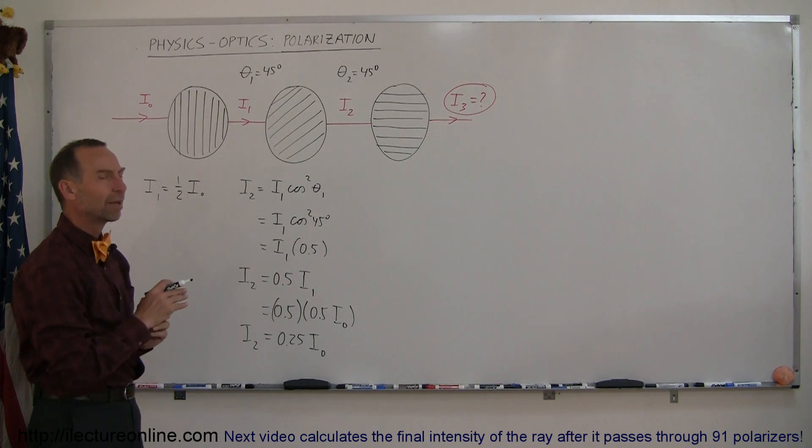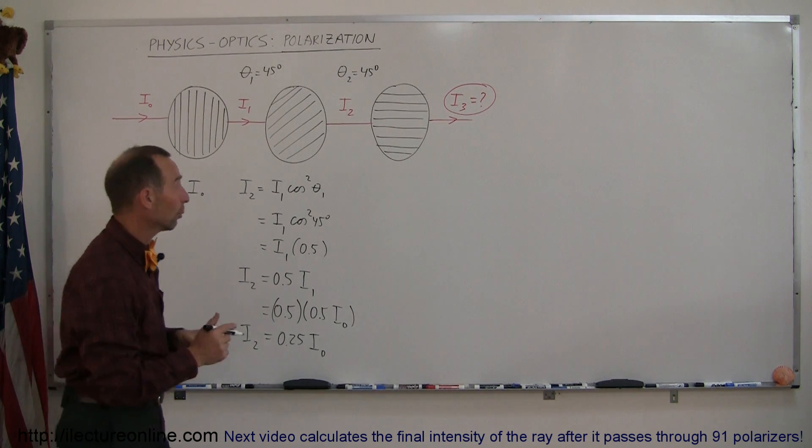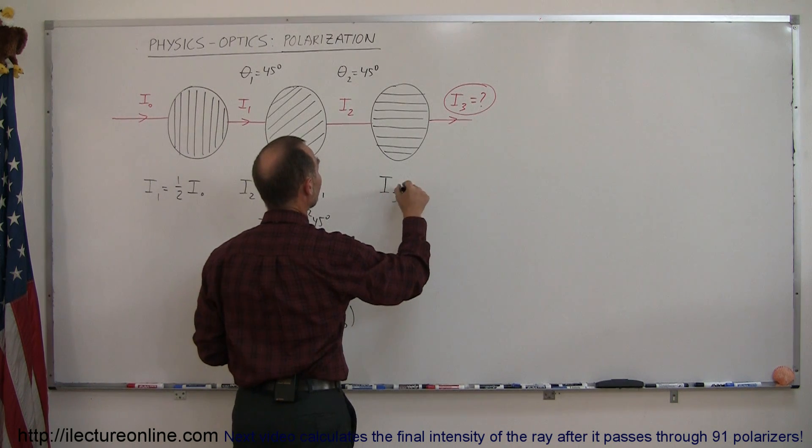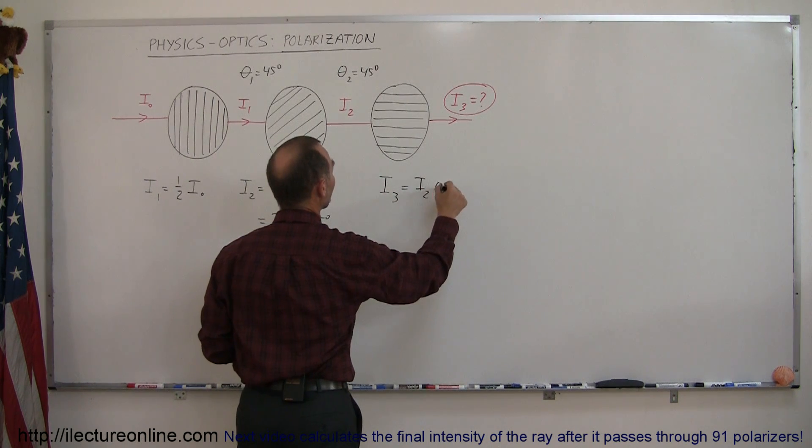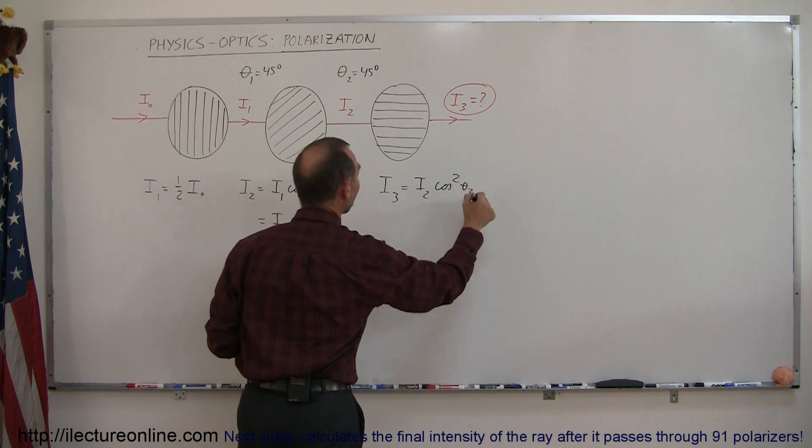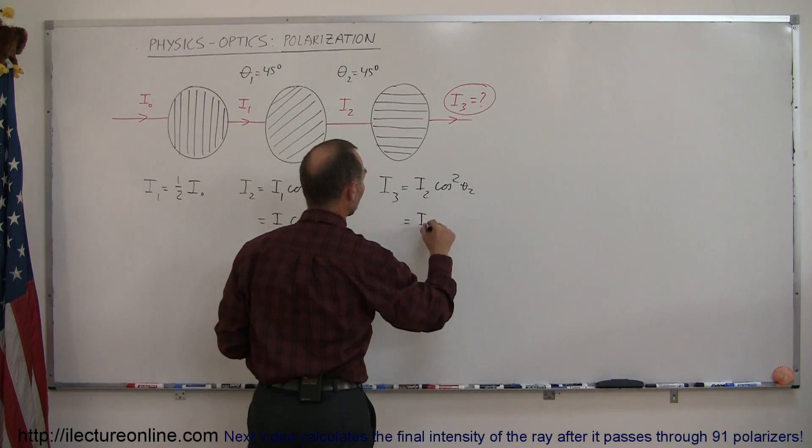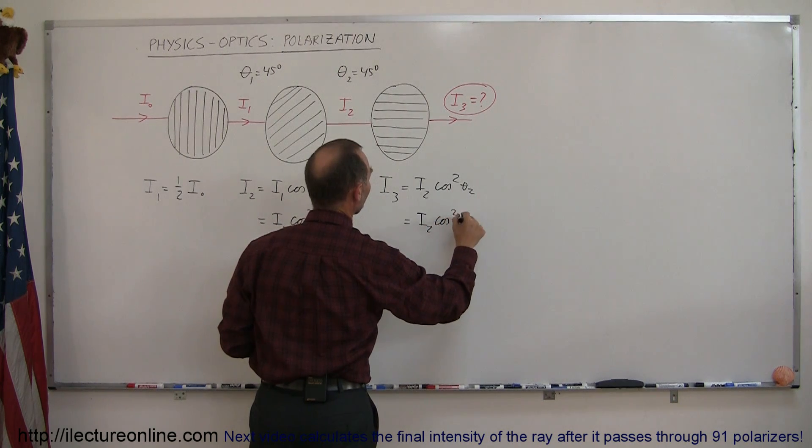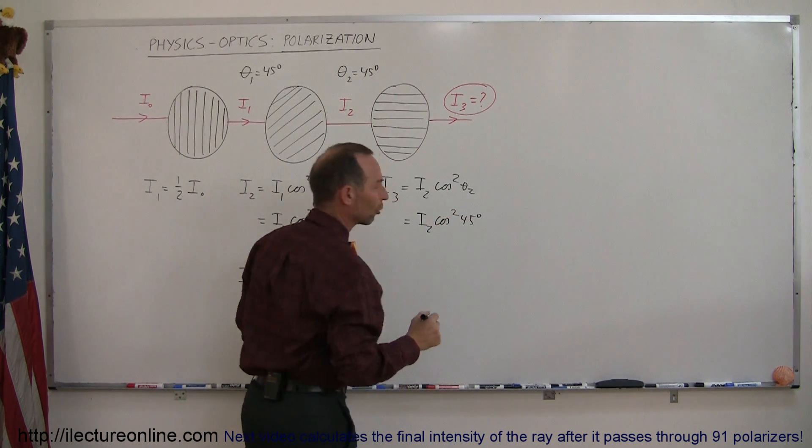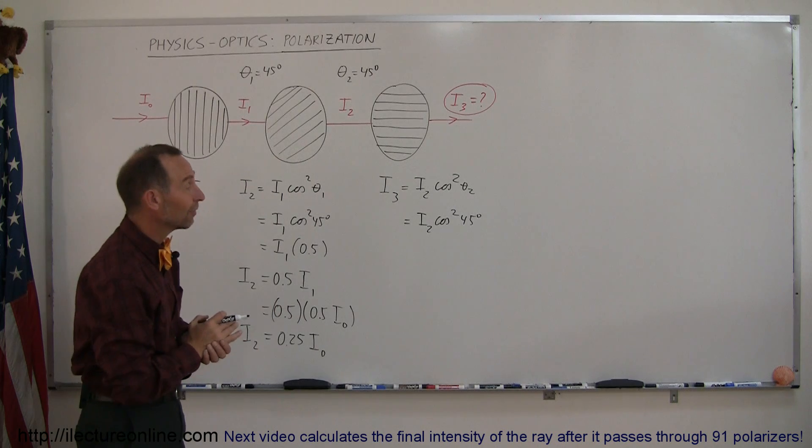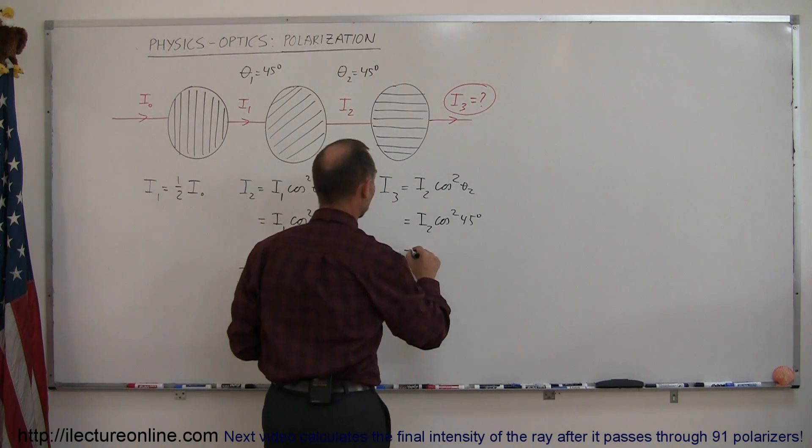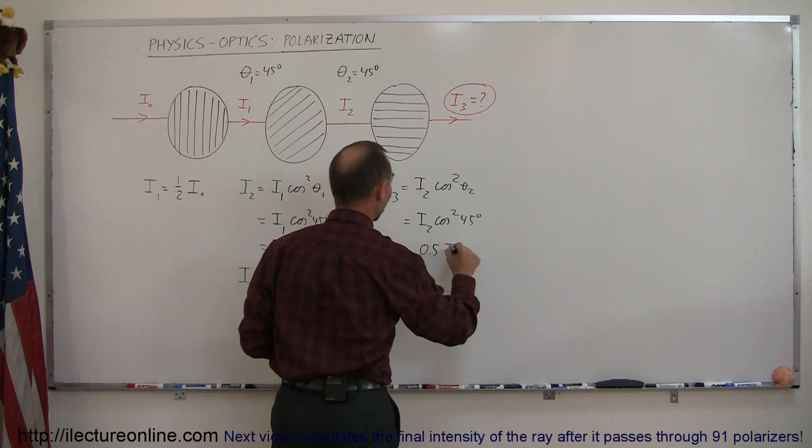So what happens now when it passes through the third polarizer? Well, what we can say here is that I₃ is equal to I₂ times the cosine squared of the second angle. The second angle also being 45 degrees, so this is equal to I₂ times the cosine squared of 45 degrees. And of course, the cosine of 45 degrees is 0.707 squared—you get 0.5—so that is equal to 0.5 times I₂.